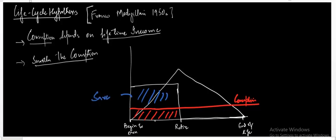After retirement, this part represents dissaving. He is utilizing the savings that he accumulated from when he began to earn up to the age of retirement, and he is using those savings to smoothen his consumption through to the end of his life.